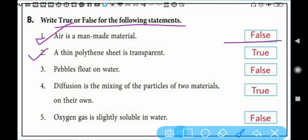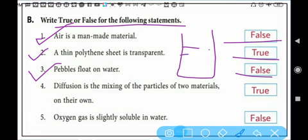Second: polythene sheet is transparent. Yes, true. Light passes through polythene sheet, that's why it is transparent. Pebbles float on water - do pebbles float on water? No, it is false because pebbles sink. If you put pebbles in water, they sink to the bottom.